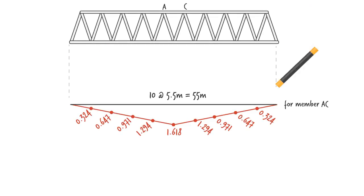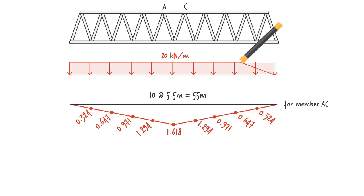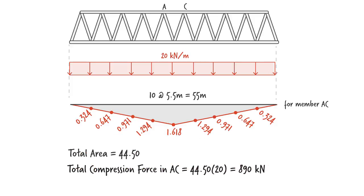For member AC, since its influence line has no positive region, we place the distributed load over the entire length of the truss in order to determine the maximum compressive force. It equals 890 kilonewtons. No tensile force develops in AC.